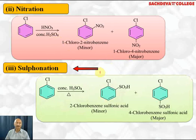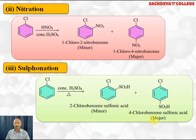In sulfonation, chlorobenzene heated with concentrated sulfuric acid gives 2-chlorobenzenesulfonic acid (ortho) and 4-chlorobenzenesulfonic acid (para), with 4-chlorobenzenesulfonic acid as the major product. Ortho and para are the IUPAC names. The electrophile in sulfonation is SO₃, which is electron deficient — its sulfur is positively charged — therefore it acts as the electrophile.